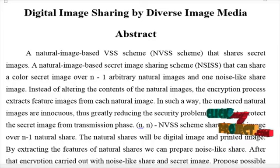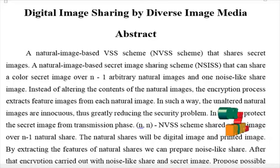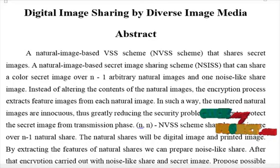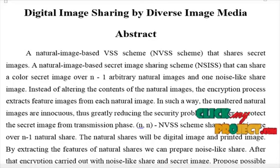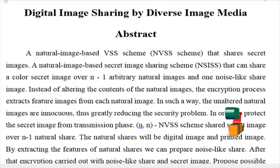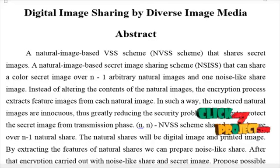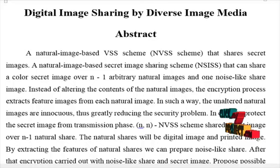Initially, the feature extraction process is performed for natural shares, where digital images and printed images are used as natural shares. With the extracted features, the secret image is encrypted by the n-1 NVS scheme, where the process is carried out by n-1 natural shares. This encrypted result is hidden using a share hiding algorithm, which generates a QR code.